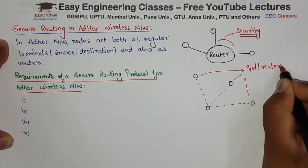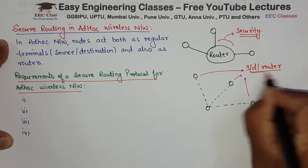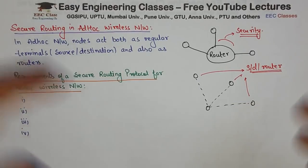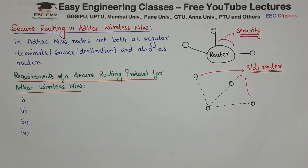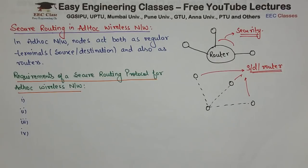In ad-hoc networks, the main problem is that resources can be reduced — bandwidth is reduced, power is reduced, memory is reduced — and as a result, security is also reduced.